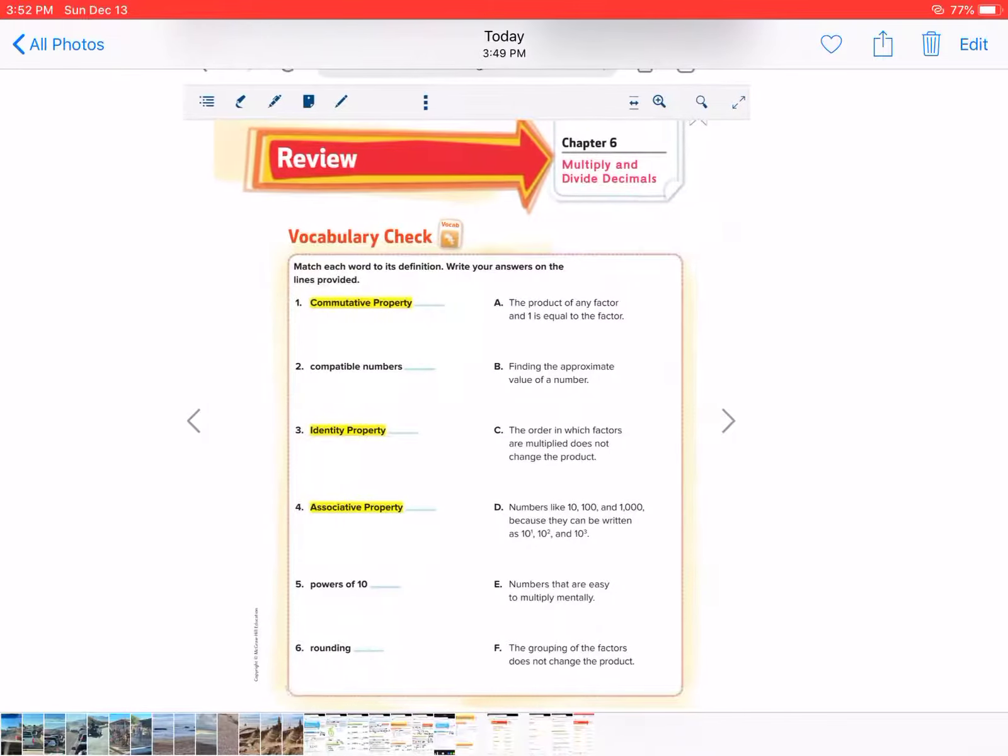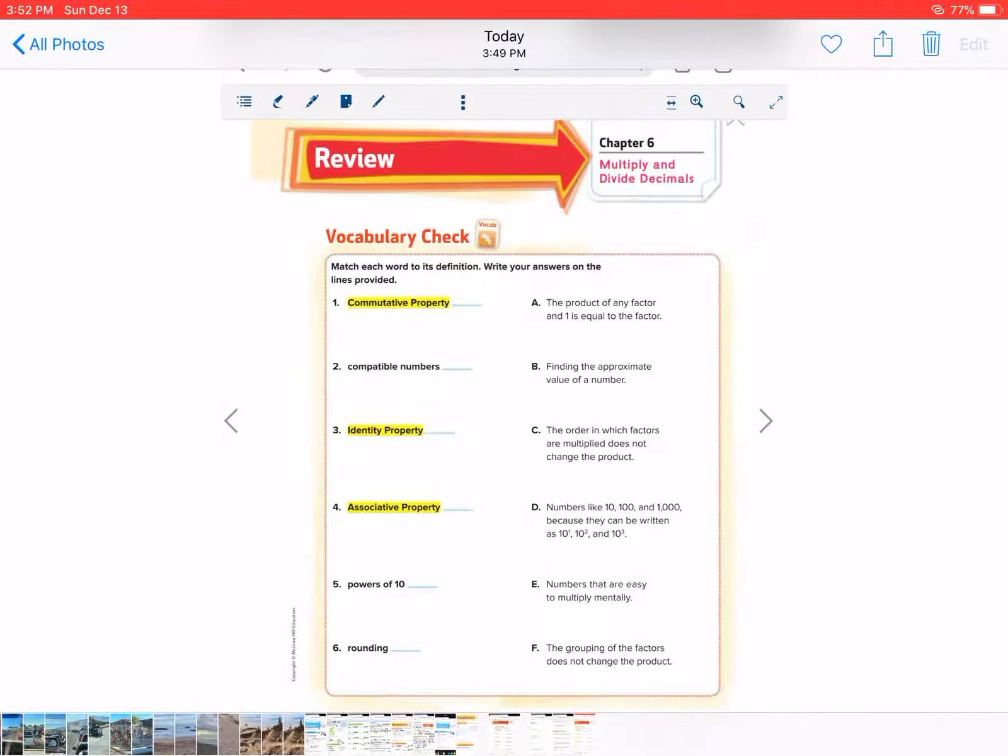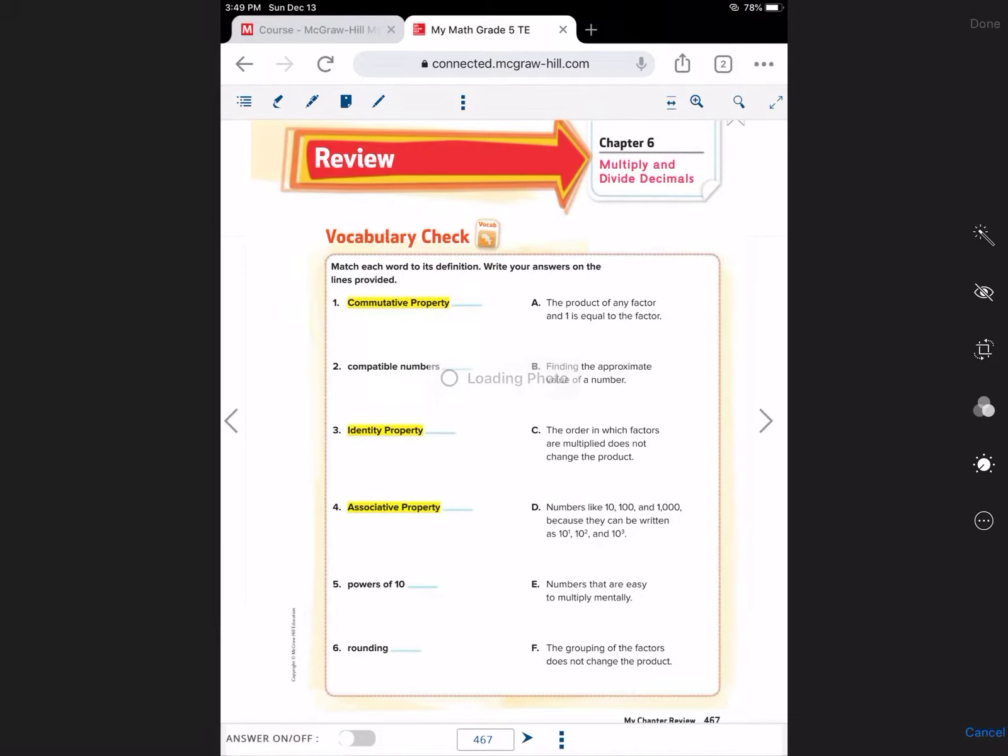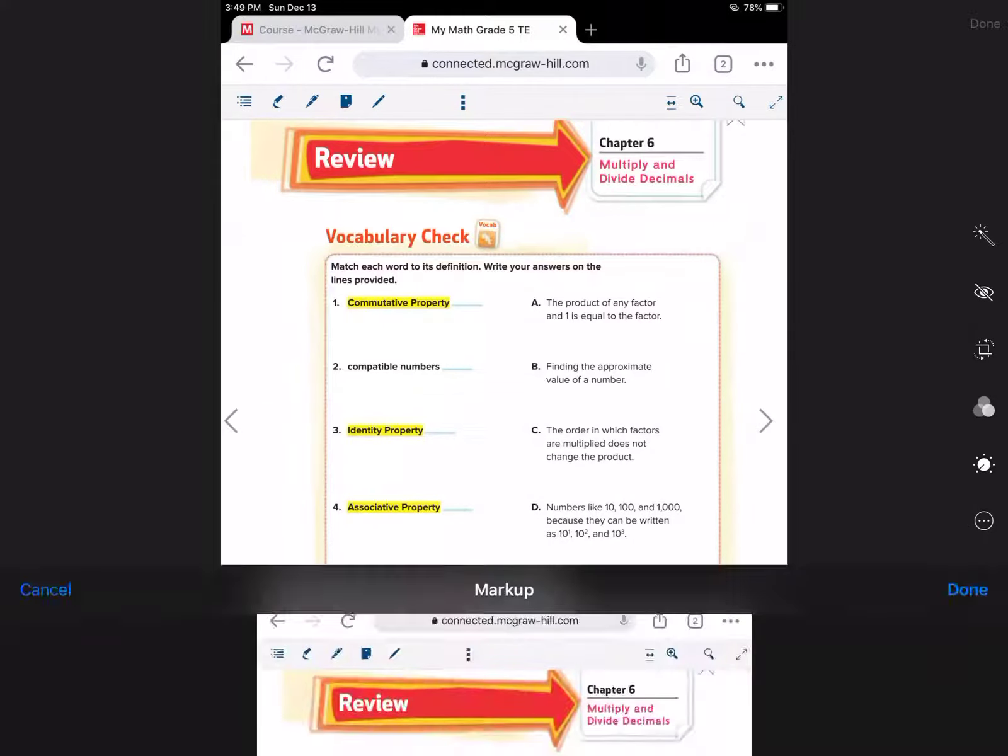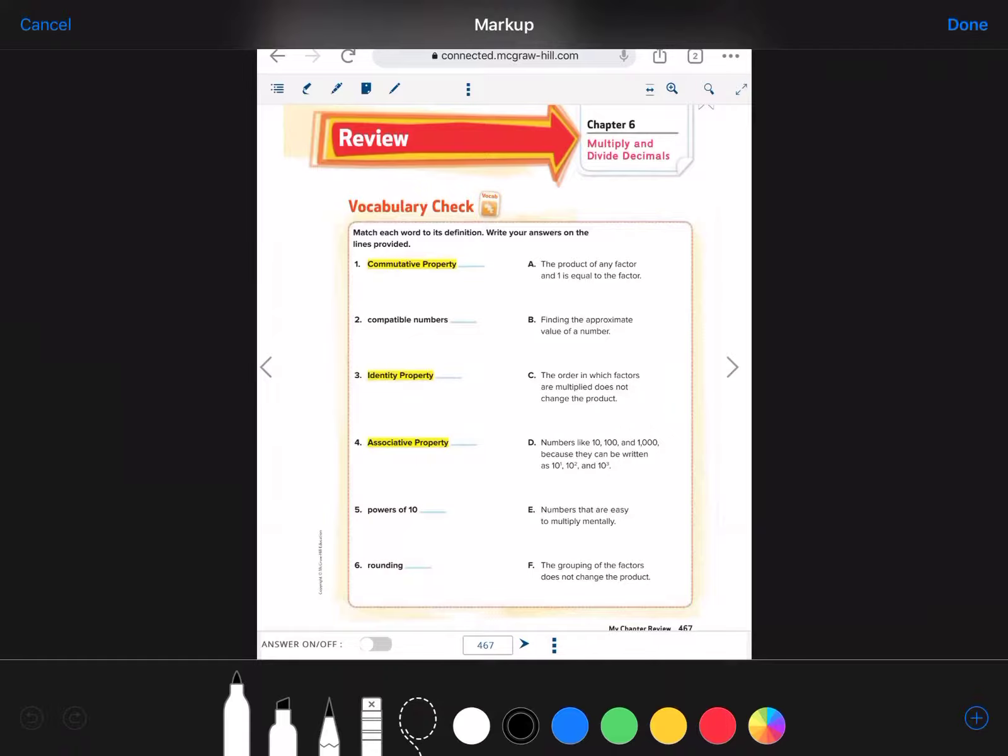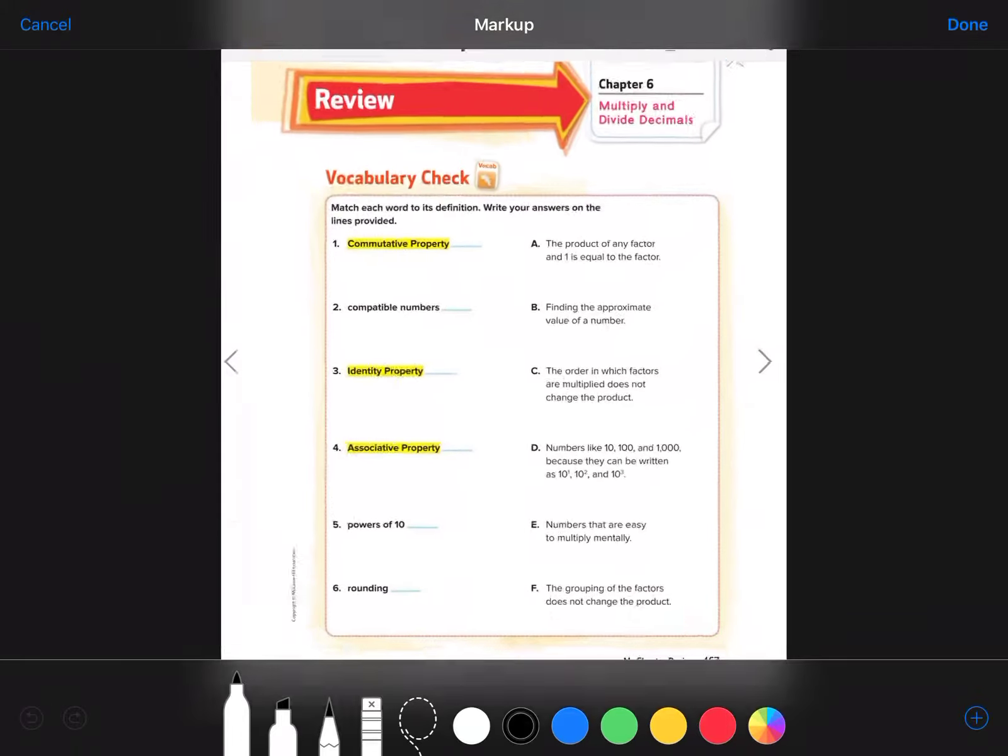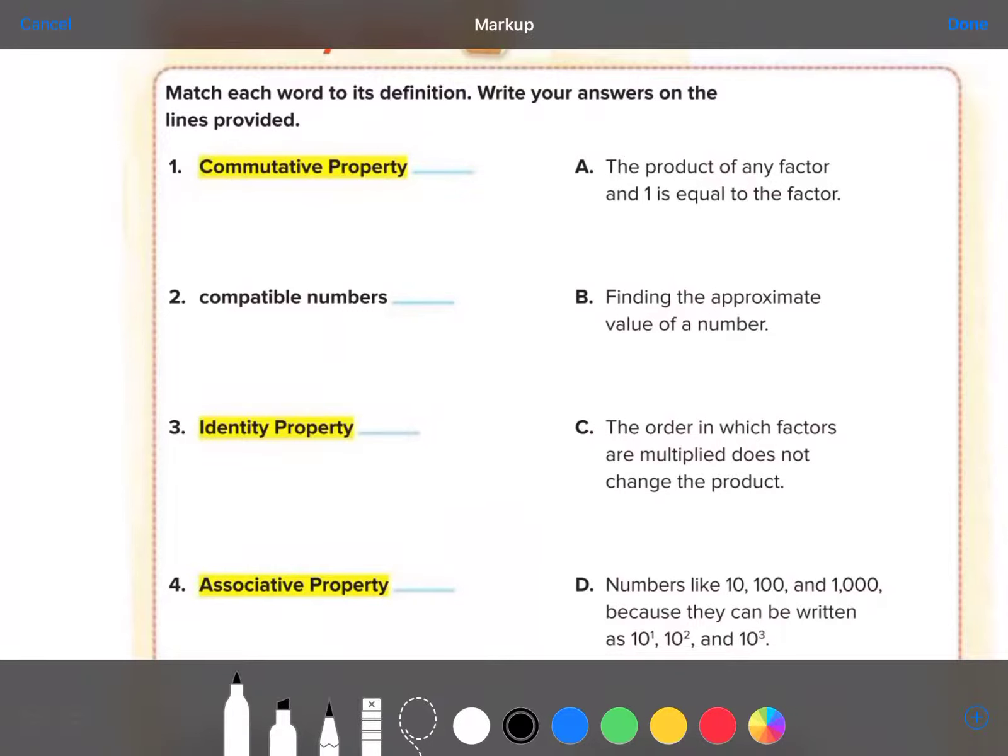Alright, number one, the commutative property. Let me get this on markup so that we can write the answers on this. The commutative property is where the order of the factors that are multiplied does not change the product. Do you see that somewhere? Yes, right there.